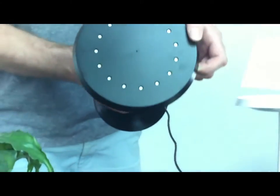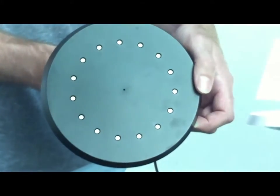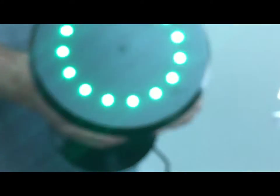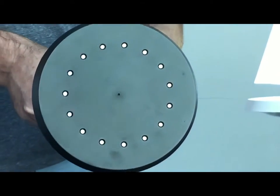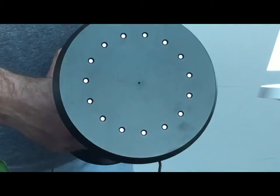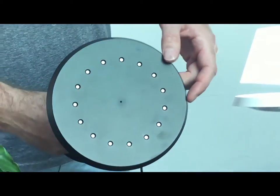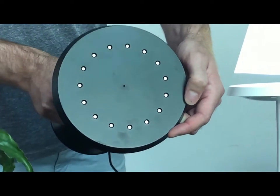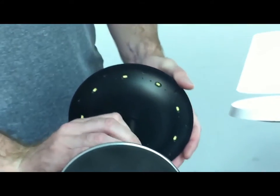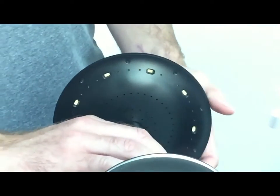On the top surface we have 15 LEDs which point up into the lampshade. On the bottom surface we have nine bigger LEDs. These point down towards the base.